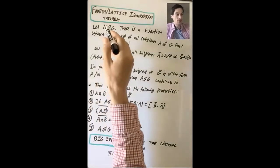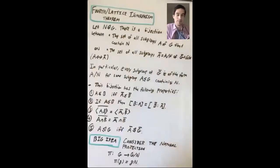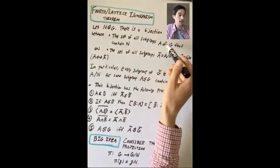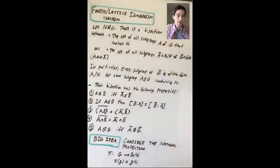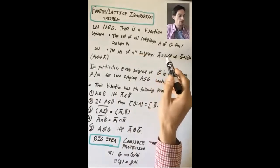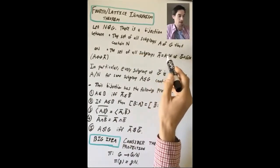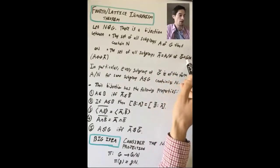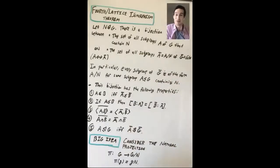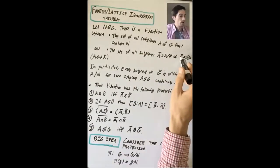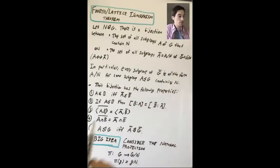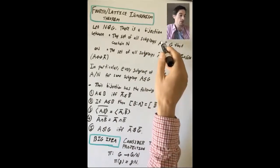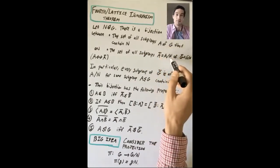So let's start with a normal subgroup N of a group G. There is a bijection between the set of all subgroups A of G that contain N, and the set of all subgroups A-bar of G-bar, which we're going to call G mod N. So we know G mod N is a group because N is normal in G. There's this correspondence between subgroups A of G and subgroups A-bar of G-bar, where A-bar can be described in terms of A as A mod N.